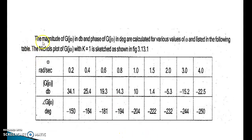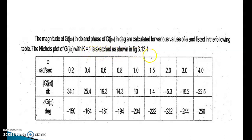The magnitude of G(jω) in decibels and the phase of G(jω) in degrees are calculated for various values of ω and listed in the following table. The Nichols plot of G(jω) with K = 1 is shown in the figure. The table columns are: ω in radians per second, |G(jω)| in dB, and ∠G(jω) in degrees.